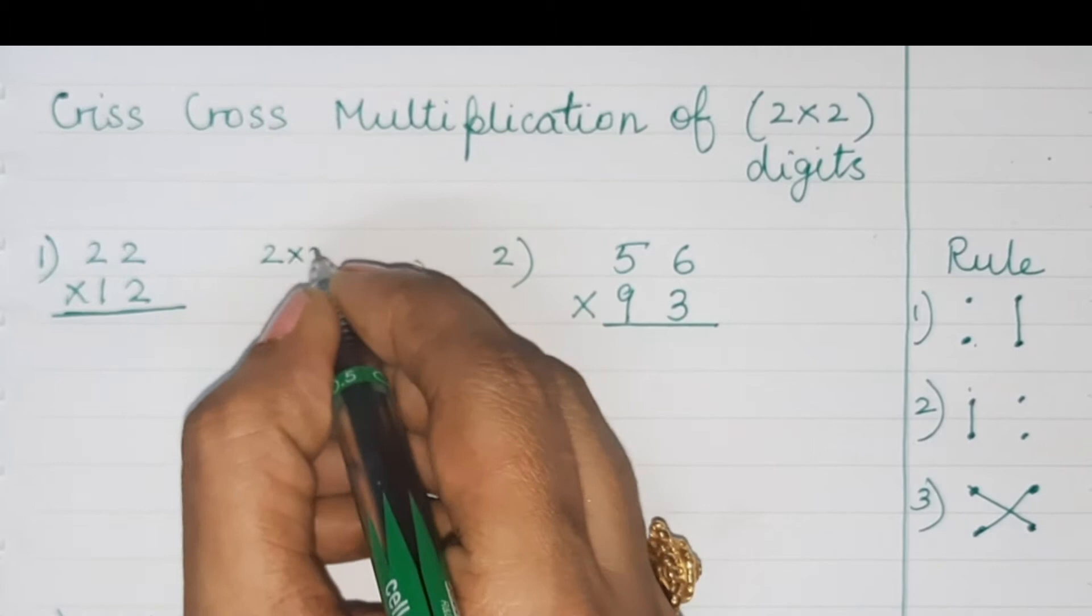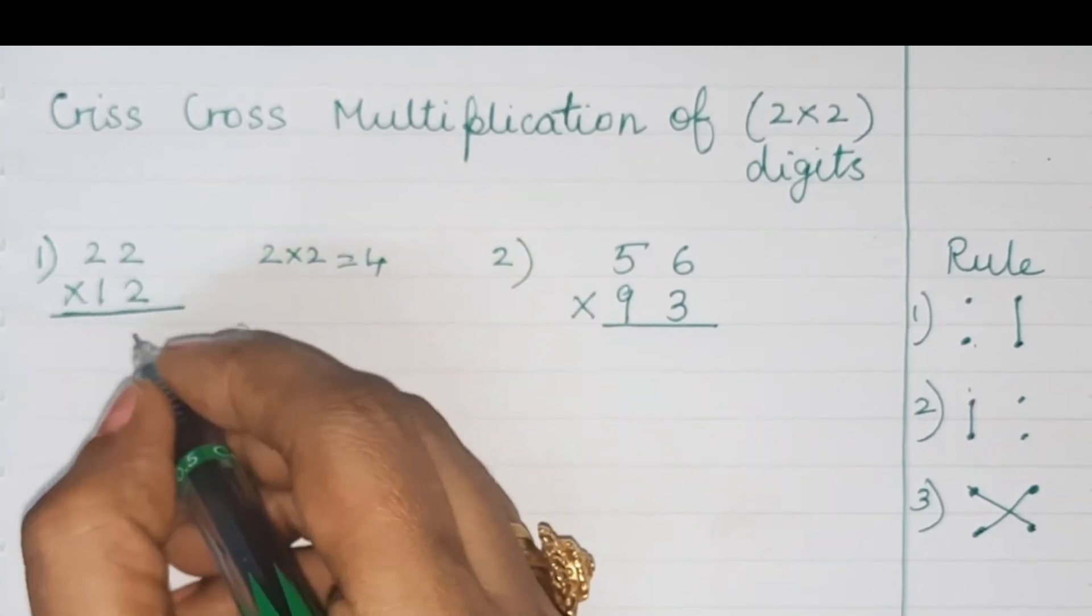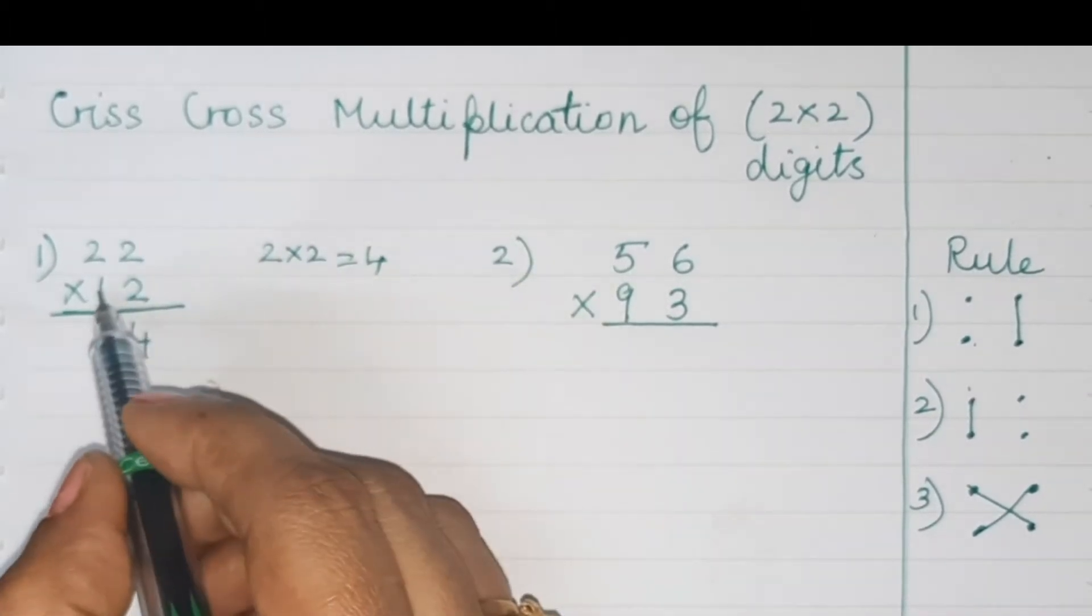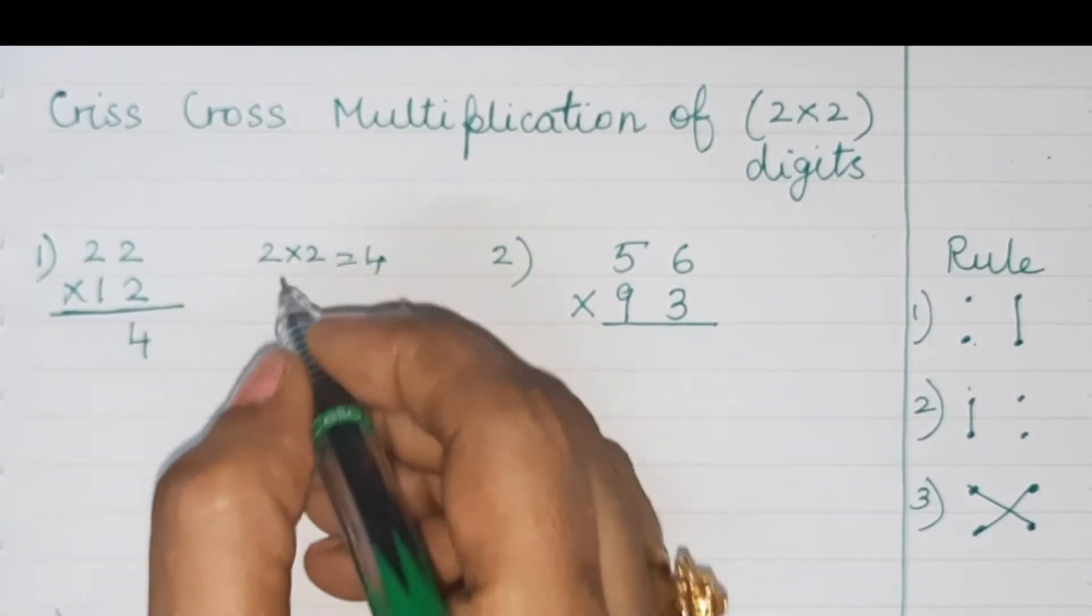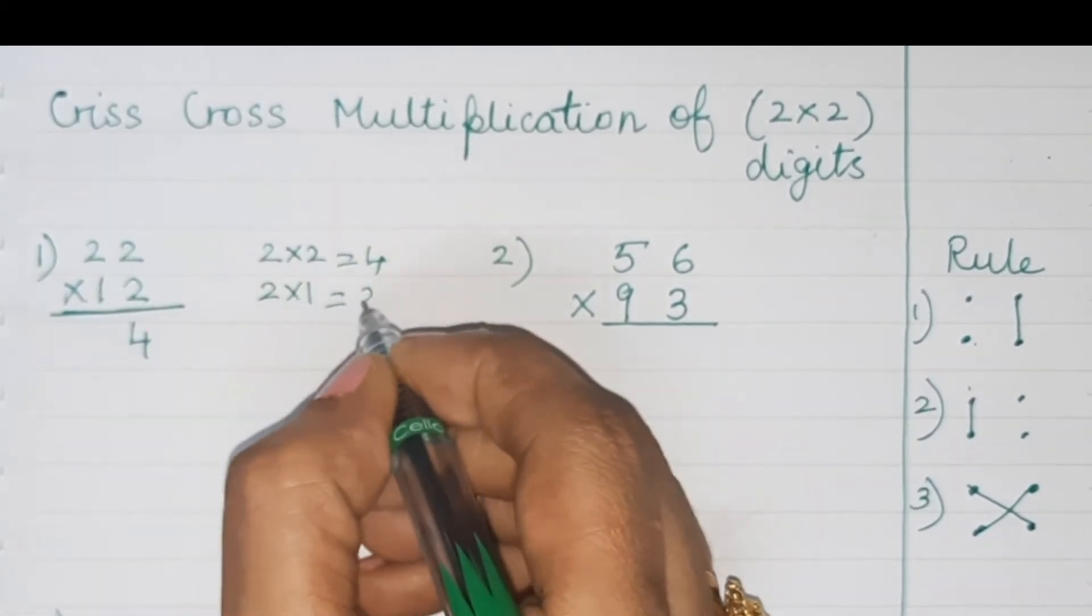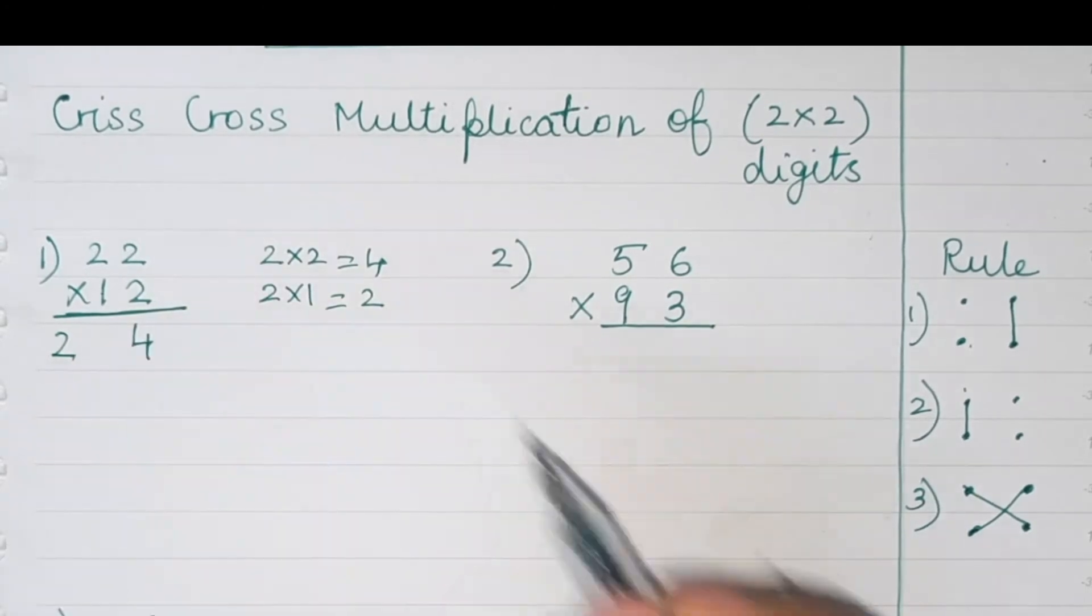Digit on the right is two by two. Two by two is four. We'll write four as shown. Then we'll multiply two by one, which is the digit on the left. Two into one is two. We'll write two as shown.